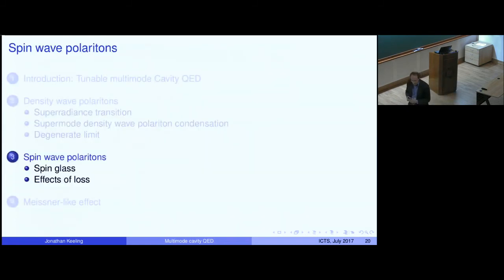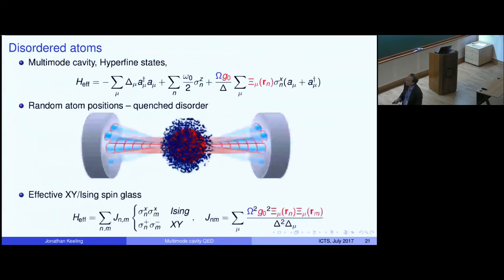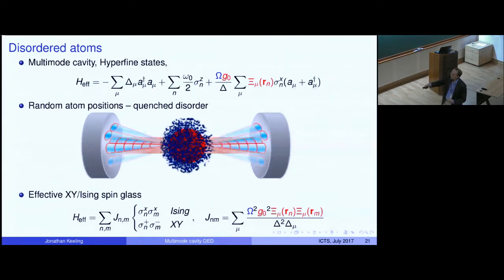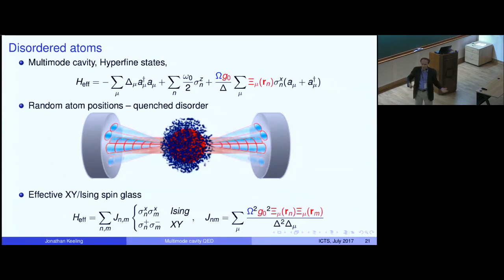Thinking about spin states of atoms rather than density states, this setup allows exploration of different spin glass models or spin-spin interaction models. Taking into account what the confocal cavity provides — sign-changing interactions — you can ask what interesting physics arises in a spin glass realization of this multi-mode cavity.